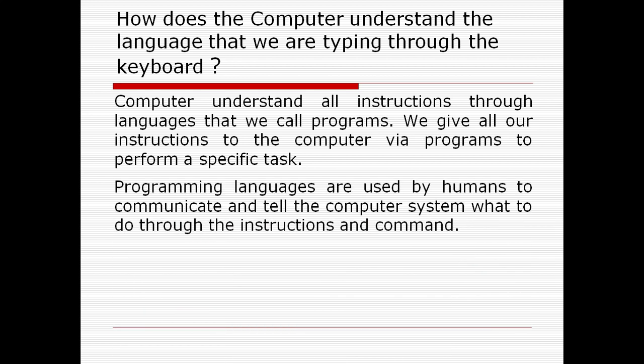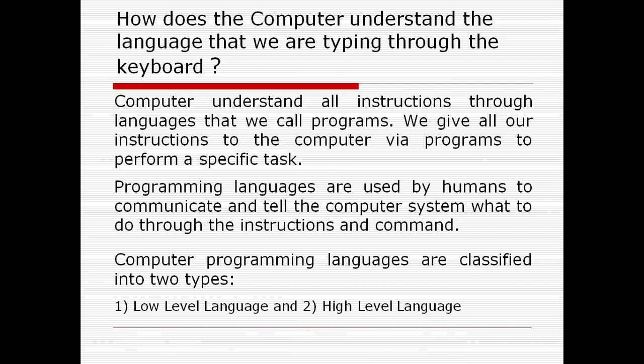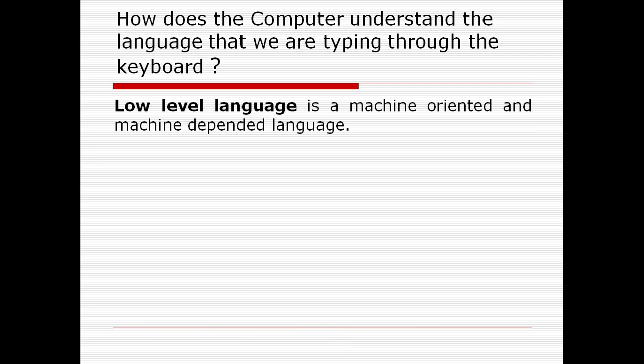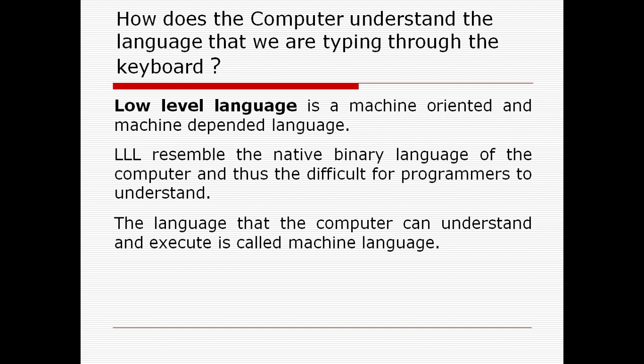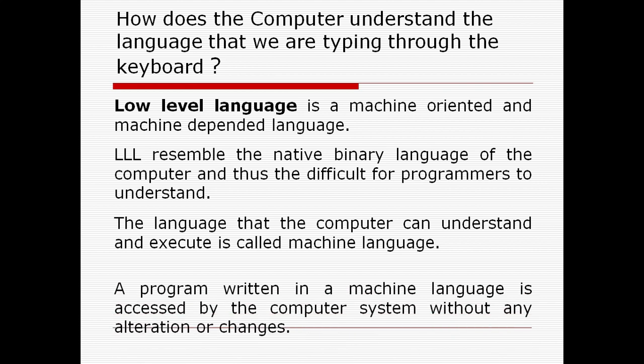Programming languages are used by humans to communicate and tell the computer system what to do through instructions and commands. Computer programming languages are classified into two types: low-level languages and high-level languages. Low-level language is a machine-oriented and machine-dependent language. Low-level languages resemble the native binary language of the computer and thus are difficult for programmers to understand.